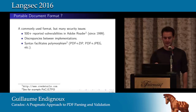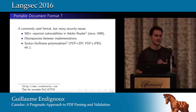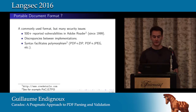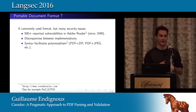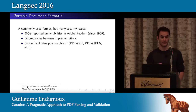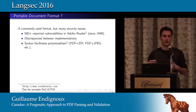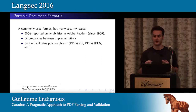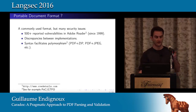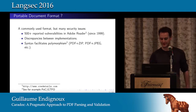The syntax of PDF facilitates polymorphism. In previous work, there have been examples of files that can be opened at the same time by a PDF reader and by a ZIP software or JPEG software. A malware detector has to consider both types of the file. You could open a PDF as a text file and get something else.